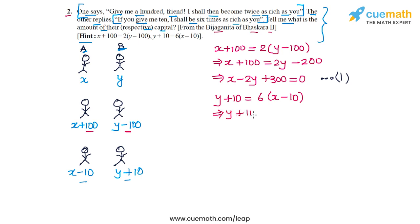Let's write it in standard form. Y plus 10 is equal to six X minus 60, or six X minus Y minus 70 equal to zero. Let's call it equation two. This is the second equation in X and Y.